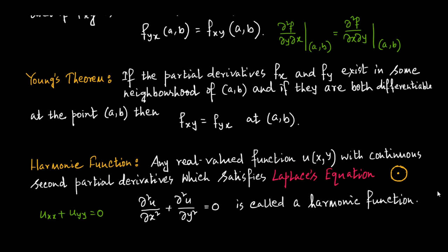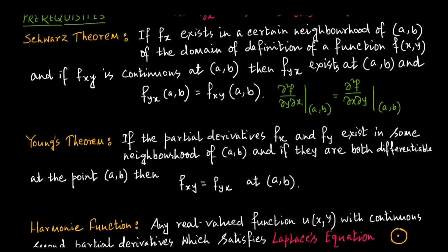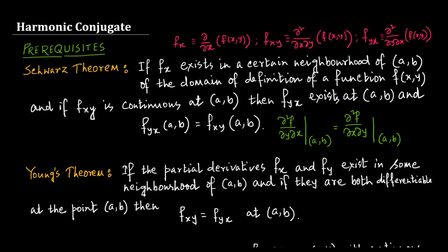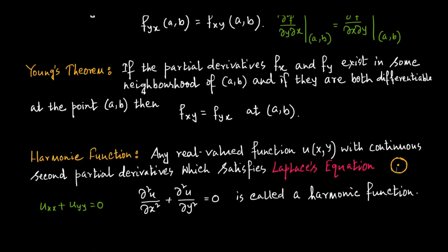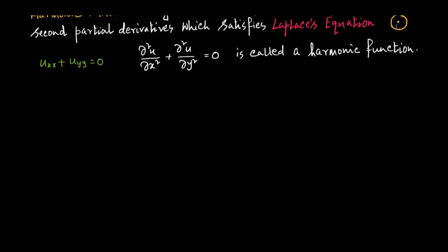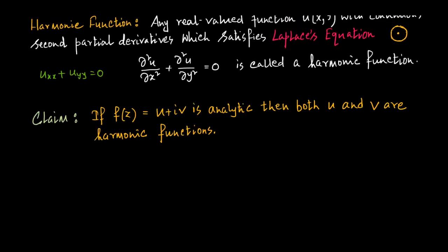This notion can be extended in n dimensions, but in complex analysis we shall consider real-valued functions of two real variables only. Now, my claim is: if f(z) equals u plus iv is analytic, then both u and v are harmonic functions — that is, both the real and imaginary parts are harmonic functions.